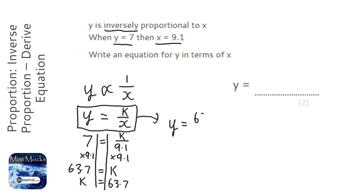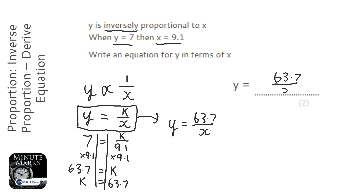Going back to the equation, y and x will keep changing but k won't. So our final equation is y equals 63.7 over x, and that is our equation.